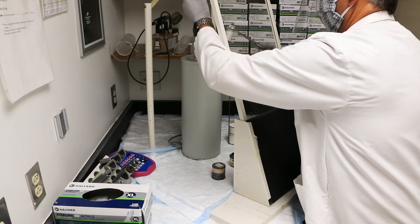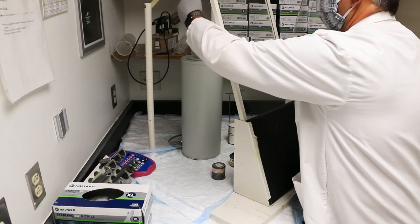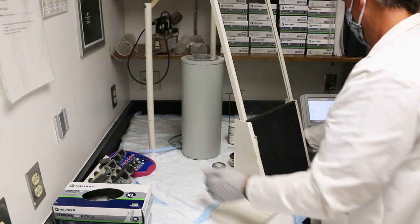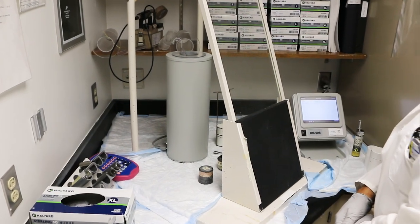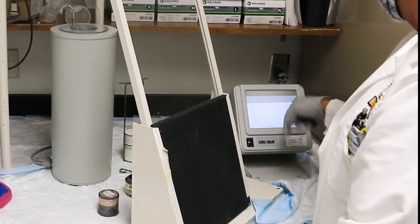Using tongs, grasp the source and place it in the dipper. Place the dipper into the well of the dose calibrator. Wait a couple of minutes to allow the ionization to stabilize.